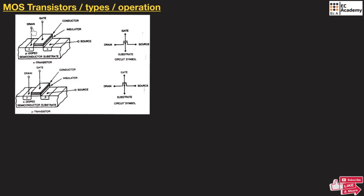Since it consists of metallic contacts, an oxide region, and a semiconductor, it is known as a Metal Oxide Semiconductor transistor. Now let us understand the operation of the MOS transistor.